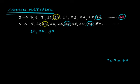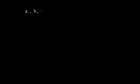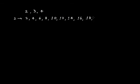Similarly, we can find common multiples for three numbers. Suppose we have the numbers 2, 3, and 4. If you write the multiples of 2, they are: 2, 4, 6, 8, 10, 12, 14, 16, 18, 20, 22, 24, and so on. For 3, the multiples are: 3, 6, 9, 12, 15, 18, 21, 24, 27, 30, 33, and so on.